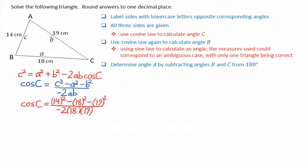Substituting in C equals 14, A equals 18, and B equals 19. We end up with cosine angle C equals 0.7149. Taking the inverse cosine of this gives angle C equals 44.4 degrees.